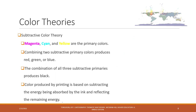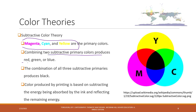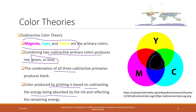We also have the subtractive color theory, where magenta, cyan, and yellow are the three primary colors. Combining any two produces three other colors, and all three together generate black. This is used by printing, and it is based on subtracting the energy absorbed by the ink and reflecting the remaining energy. That is why when you buy ink for printers, you buy those three color types — and sometimes plus black.